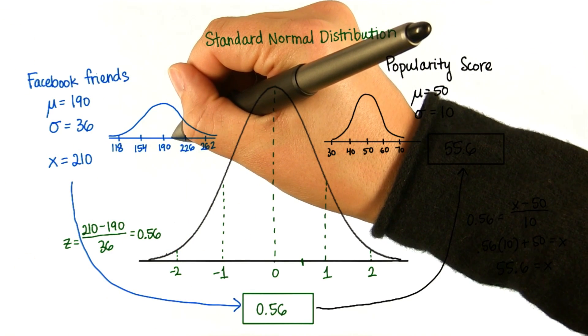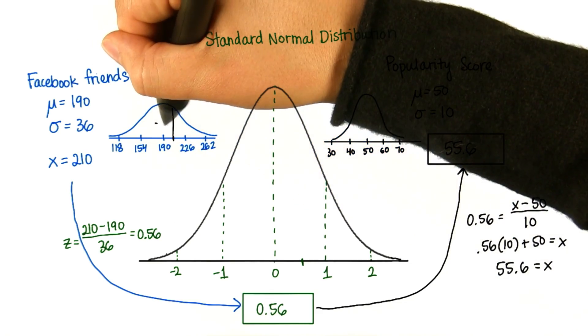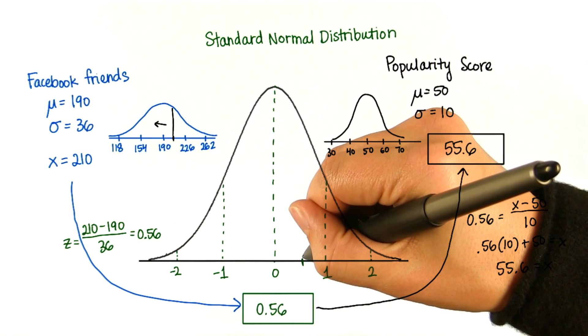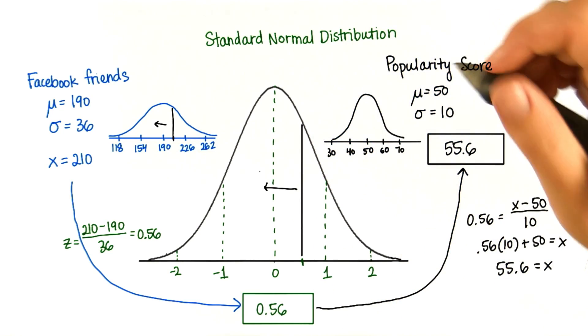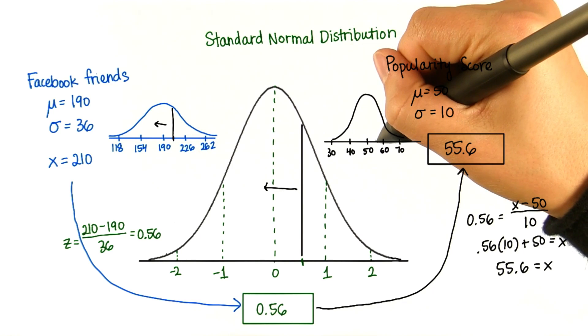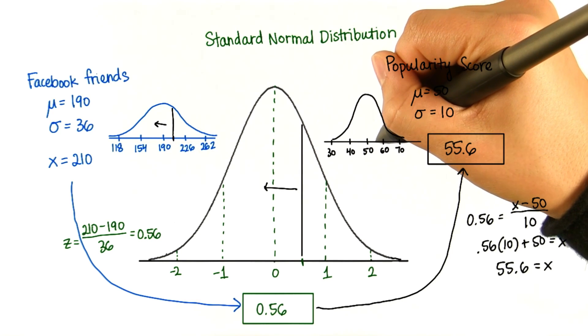A score of 210 here, the proportion less is exactly the same as a score of 0.56 here. And that's exactly the same as the proportion less than a score of 55.6 in this distribution.